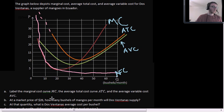At a market price of $20, how many bushels of mangoes per month will Dos Ventanas supply? If this is a perfectly competitive market, then if we have a market price of $20, that means that the demand curve faced by the firm is just a horizontal line right at $20. If this demand curve is horizontal, it means that it's also their marginal revenue curve as well as their price curve. Because in a competitive market, the marginal mango supplier is just a drop in a bucket. They don't have any effect on the overall price in this model.